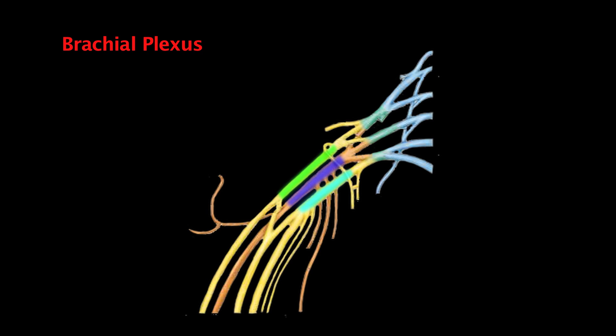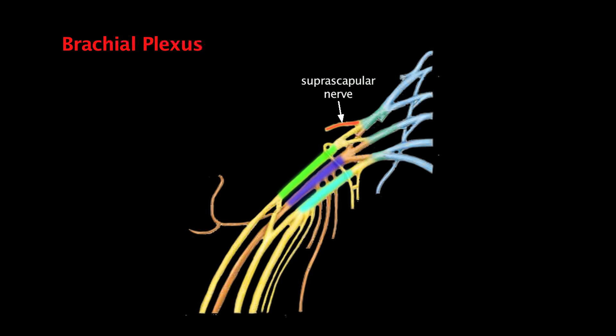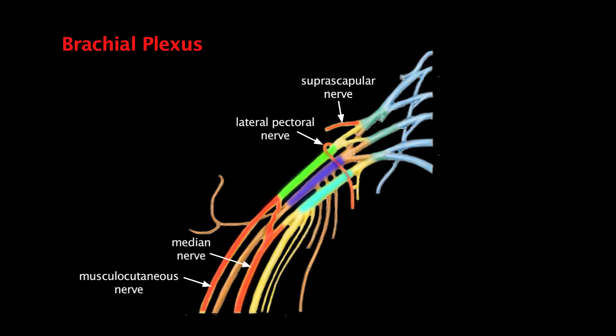I'll show all the branches of the brachial plexus in an orderly fashion, starting with the lateral cord, then the medial cord, then the posterior cord. First, the long thoracic nerve is a notable branch because it's the only one that originates from the roots of the plexus — it comes off a few roots, they merge, and the nerve travels down the thoracic cavity. Off the lateral cord, the first nerve is the suprascapular nerve, then the lateral pectoral nerve. The lateral cord then splits: one portion becomes the musculocutaneous nerve, and the other merges with a portion of the medial cord to form the median nerve.